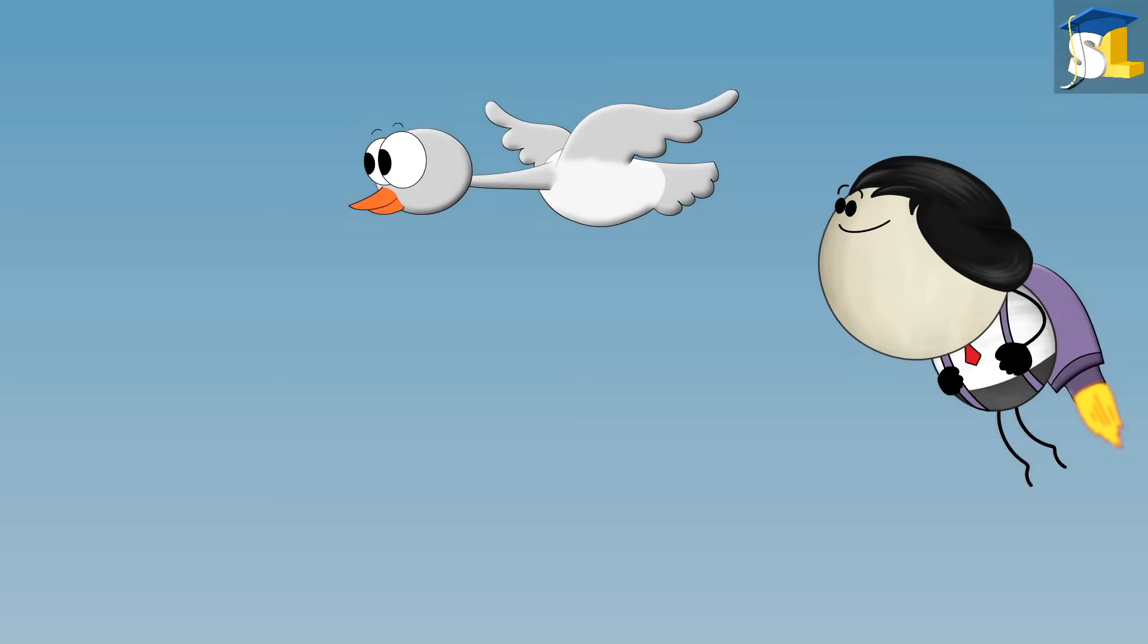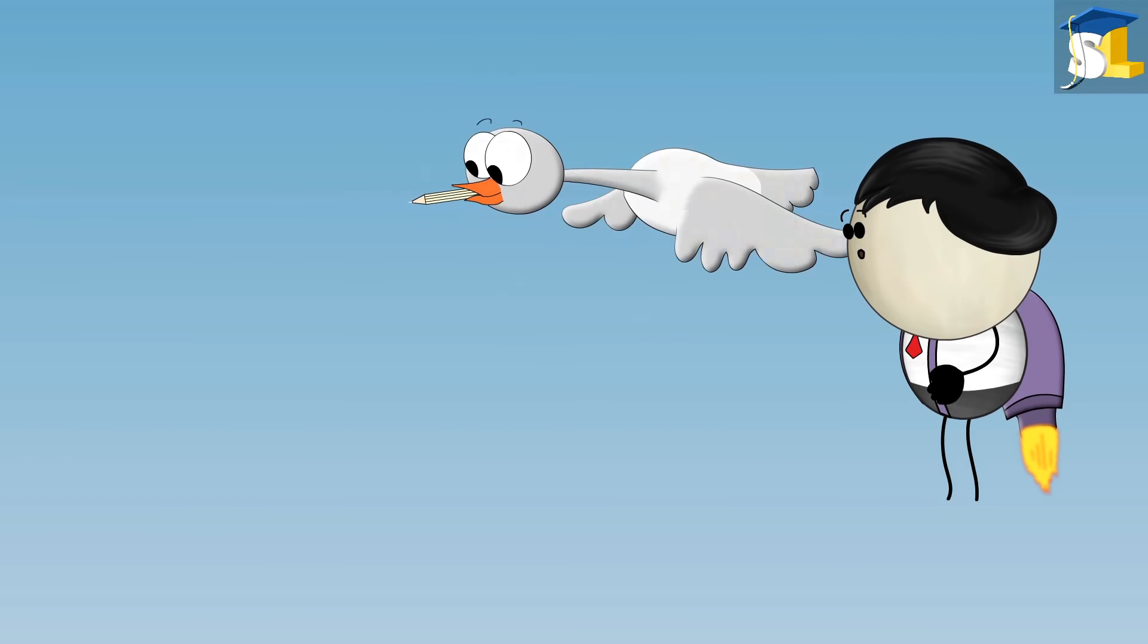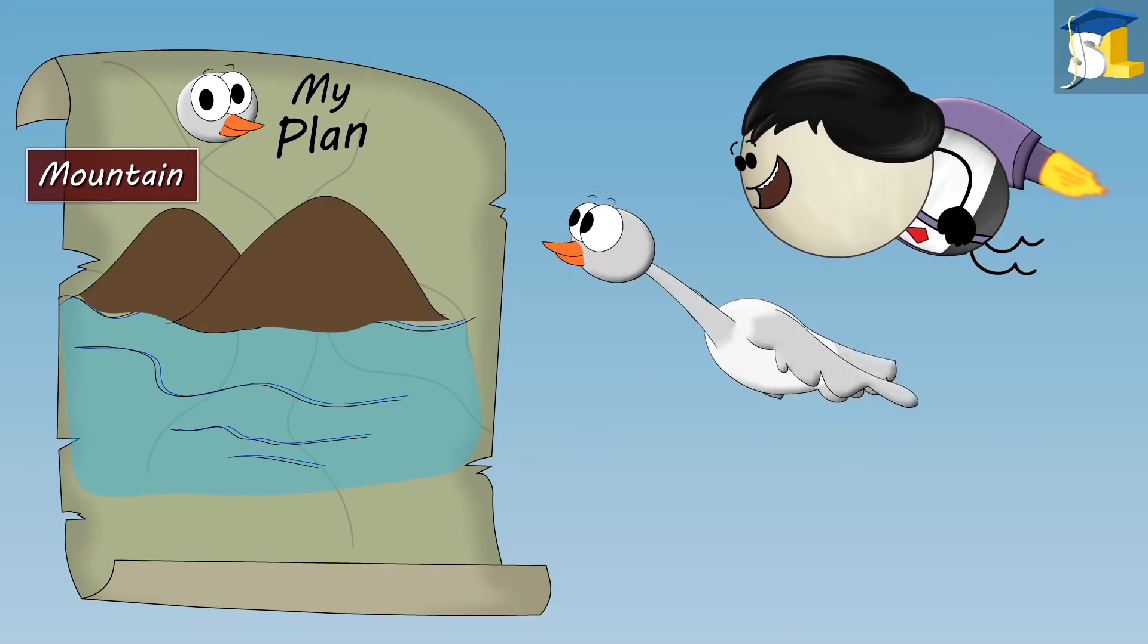Along with this, migratory birds may also find their way by creating a mental map of their route using mountains, rivers, etc.